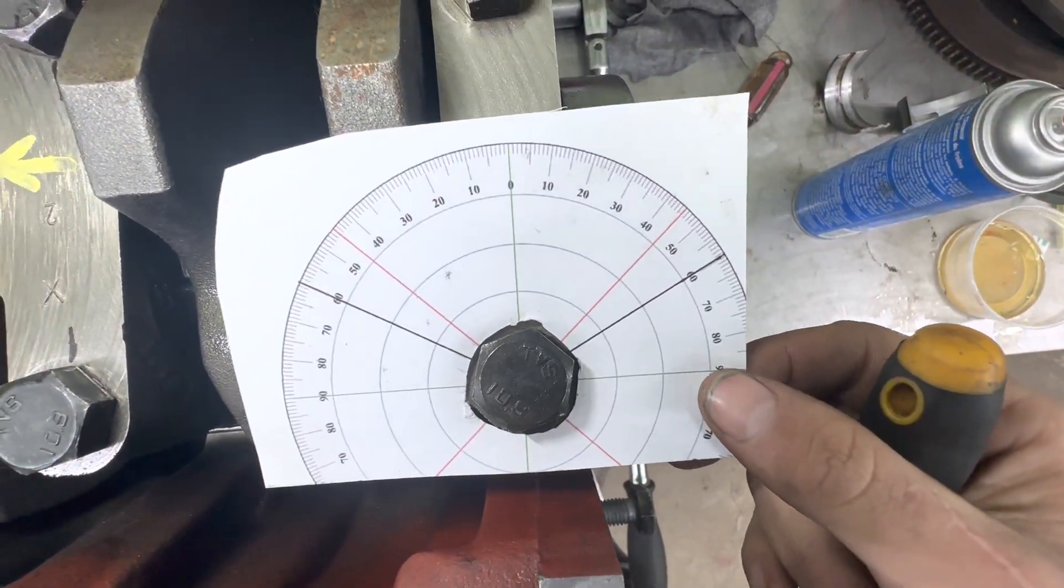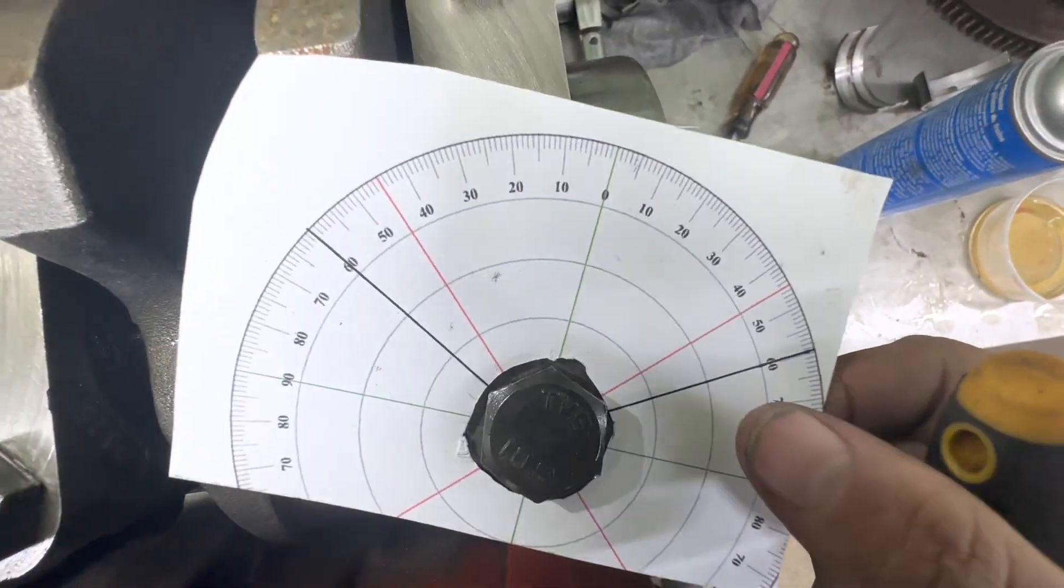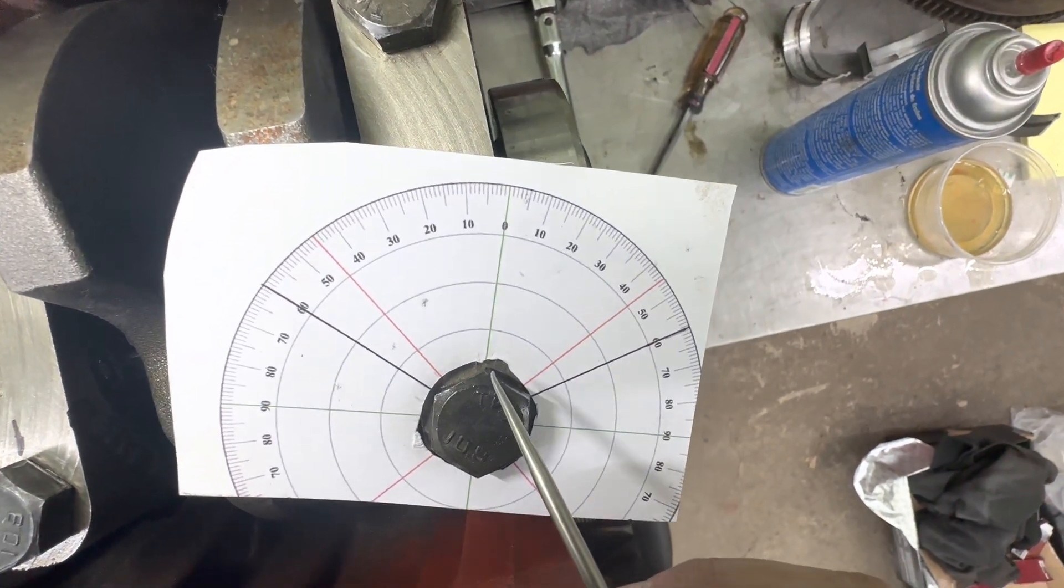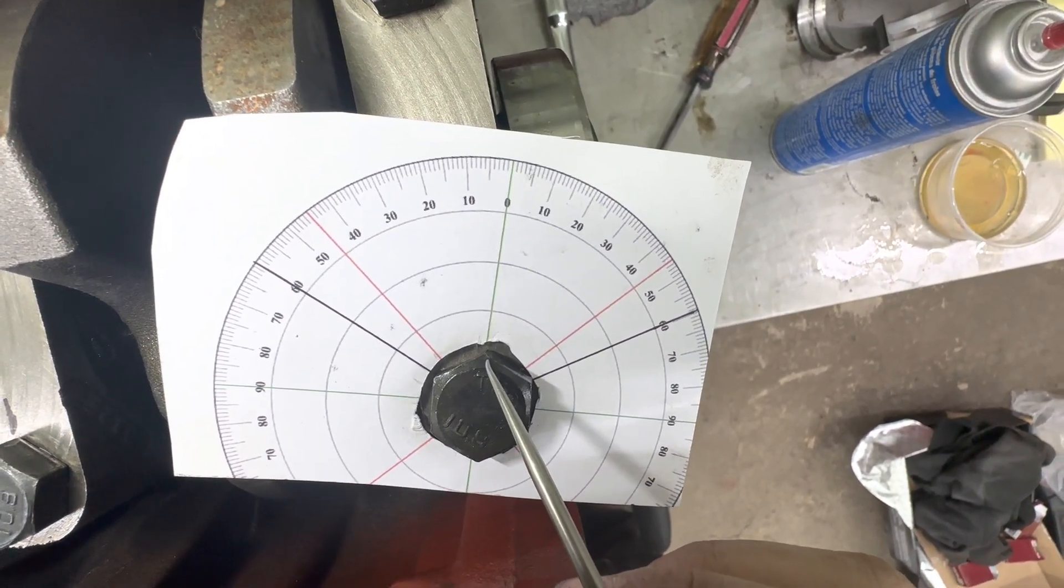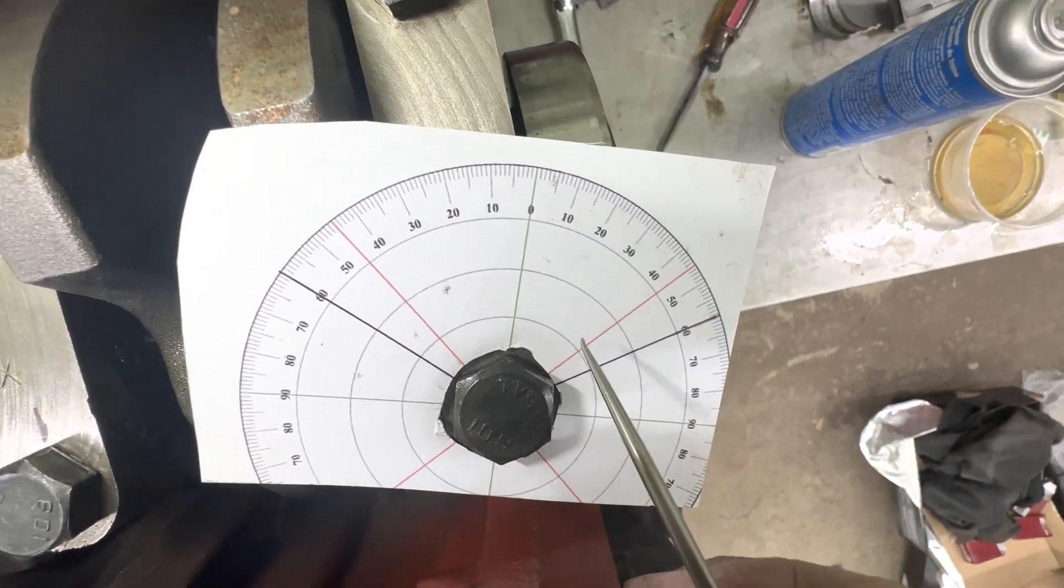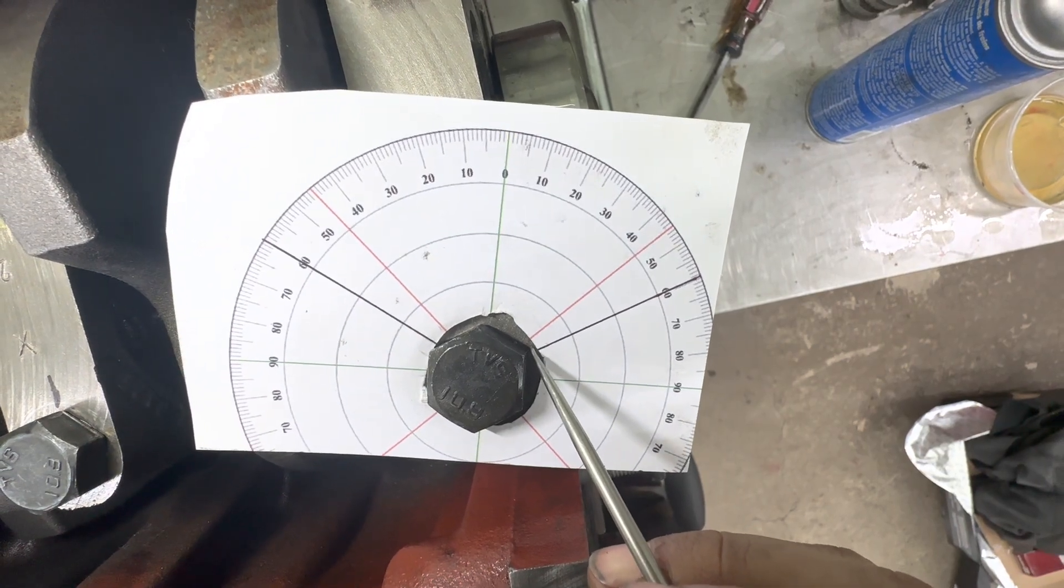Now I can take this and I can line up zero somewhere that's easy to remember. So for example, if I lined up zero right with the shoulder on this bolt here, then I make a mark over here at 60 degrees on my block. So I'd make a mark right there.